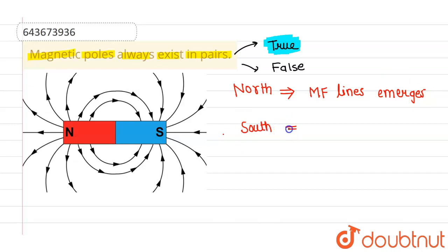And on south pole, the magnetic field lines go into south pole. So why do these exist in pairs? Because suppose if there is only north pole on a magnet,